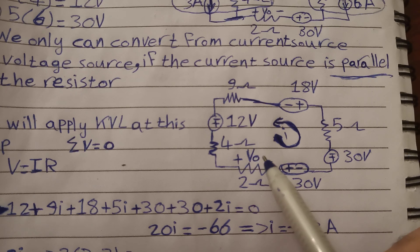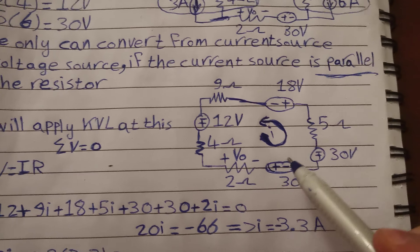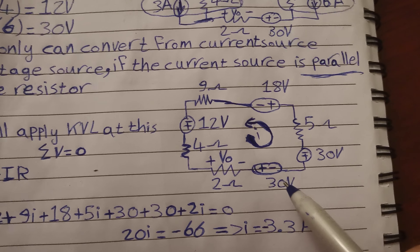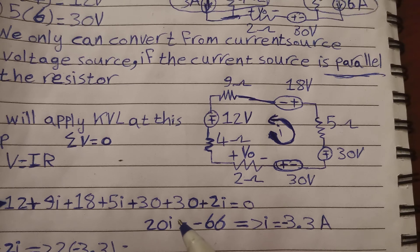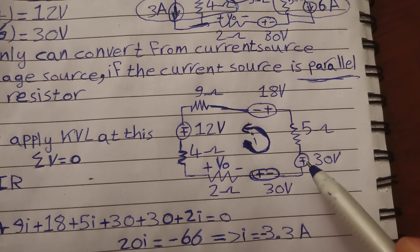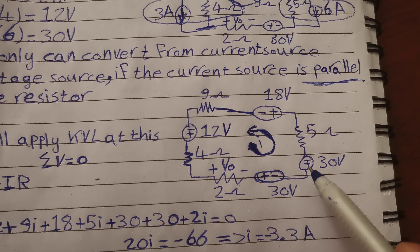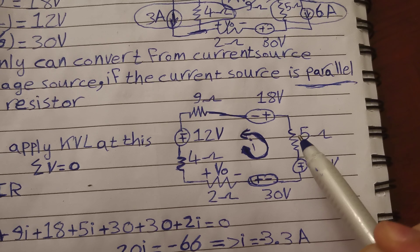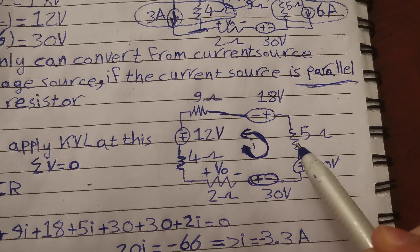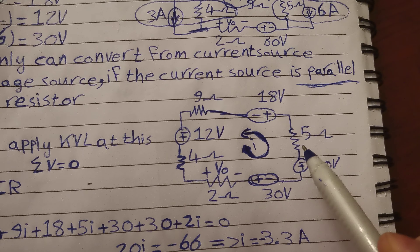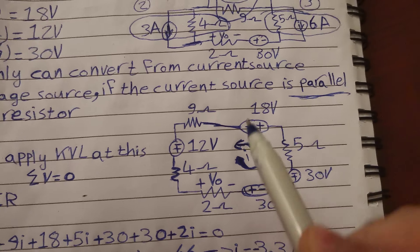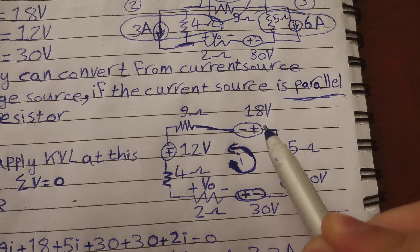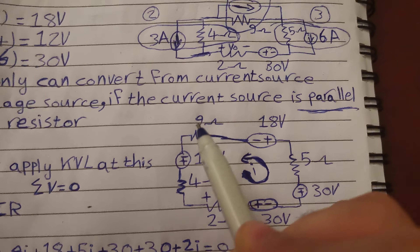The current goes from positive to negative in this voltage source, so we add plus 30. Then plus 5i, because the current goes from positive to negative (high to low potential). Then plus 18 volts, as the current goes from positive to negative.